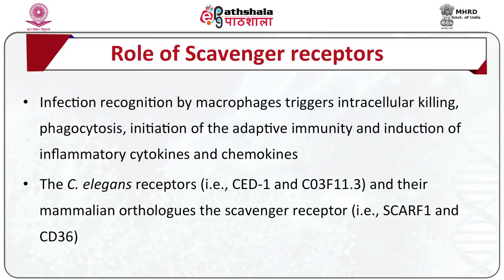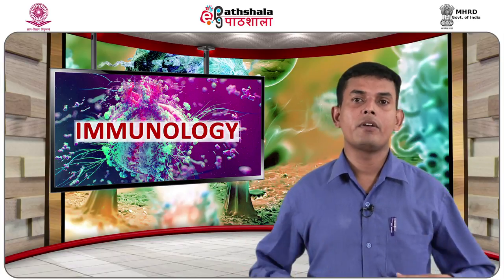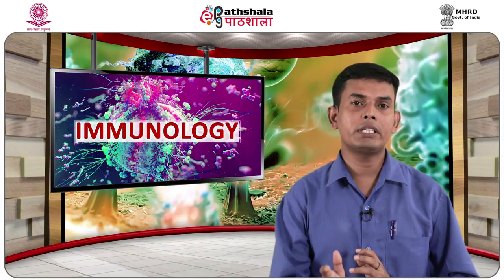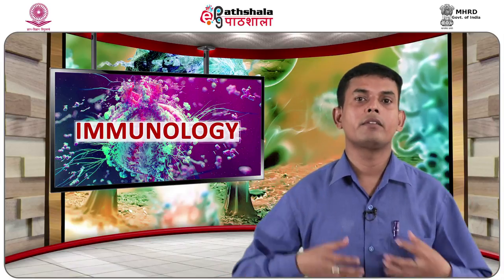C. elegans receptors, for example CED-1 and C03F11.3, and their mammalian orthologues — the scavenger receptors SCARF1 and CD36 — mediate host defense against the fungal pathogen Cryptococcus neoformans. SCARF1 and CD36 facilitate toll-like receptor 2 signaling by functioning as co-receptors and by binding and engulfing fungal pathogens, as predicted by Means in 2010.